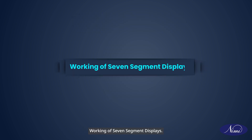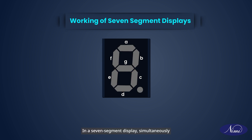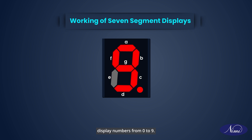Working of seven segment displays. The numeral 8 appears when all segments receive power. However, cutting power to segment G changes the display to the numeral 0. In a seven segment display, simultaneously applying power or voltage to various pins allows for the creation of combinations to display numbers from 0 to 9.